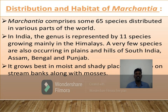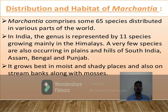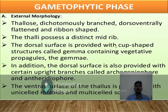When coming to the distribution and habitat of Marchantia: Marchantia comprises about 65 species distributed around various parts of the world — cosmopolitan distribution. In India, the genus is represented by eleven species growing mainly in the Himalayas; a very few species are also occurring in the plains and hills of southern India. It particularly grows in Assam, Bengal, and Punjab states. It grows best in moist and shady regions, also along stream banks alongside mosses.